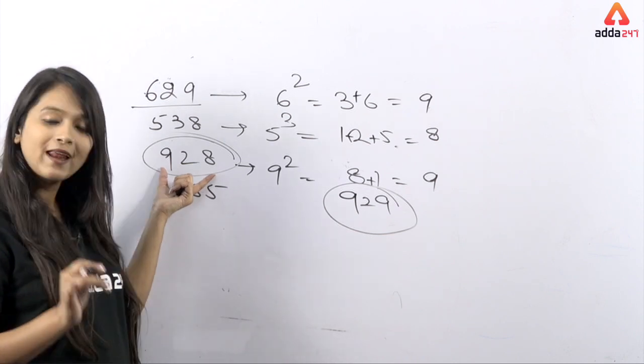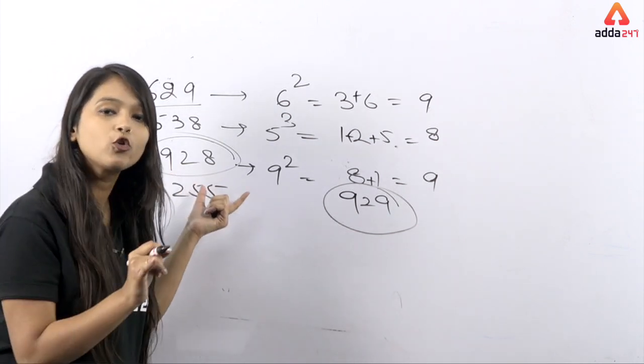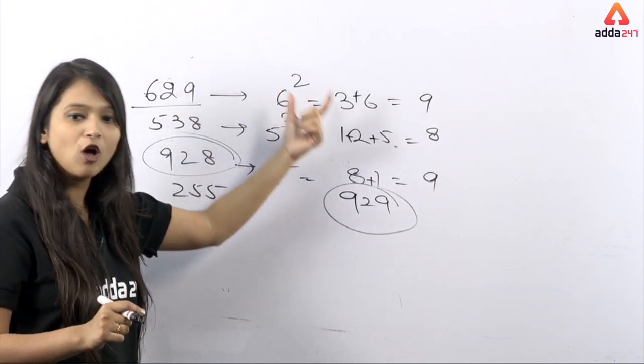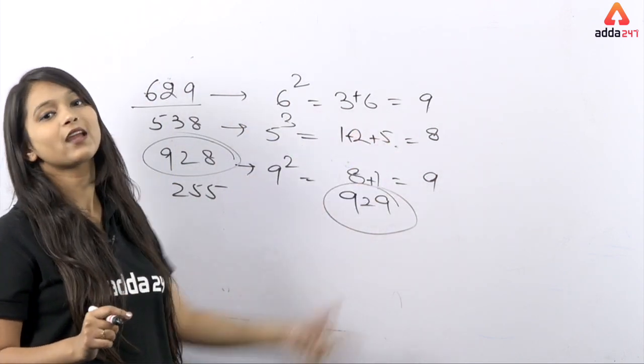So this means the odd one out will be 928, which is completely different because the rule that is being followed is: the first number to the power of the second number, and after solving that power, adding those digits gives us the third number.